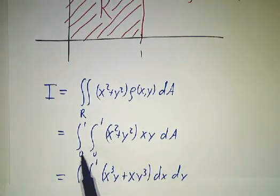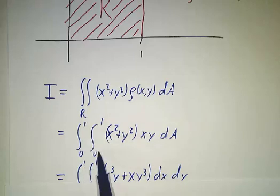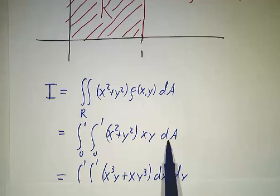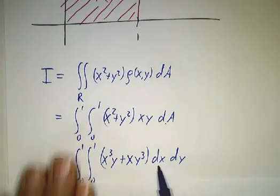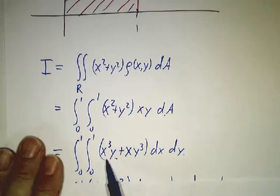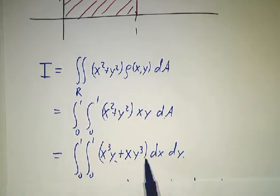And our limits of integration are x goes from 0 to 1, y goes from 0 to 1. (x² + y²) times xy. And dA we're going to write as dx dy. And when you multiply it out, it's just x³y + xy³.